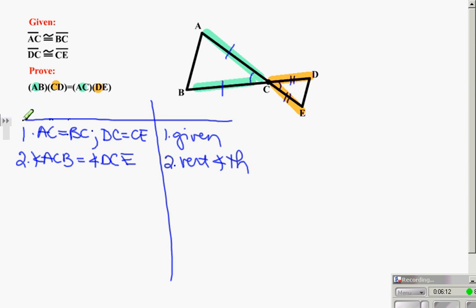So I'm working on that side angle side option to say that the triangles are similar. Now what I can do at this point is because that AC and CB are the same and CD and CE are the same, I can set up a ratio and say that AB compared to CE is equal to BC.